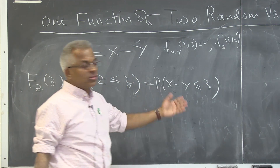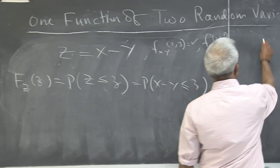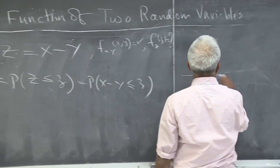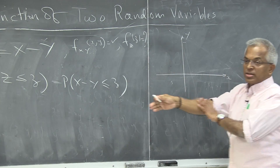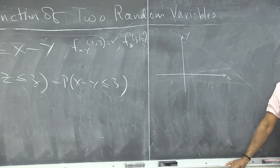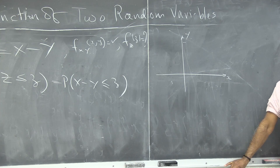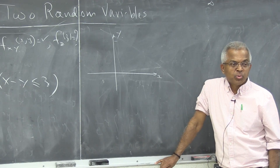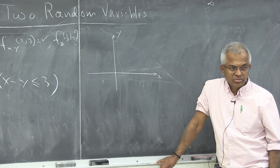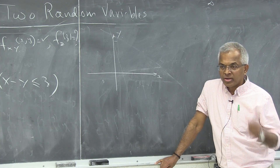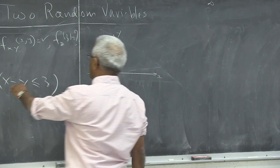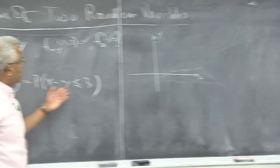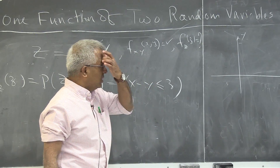We need to figure out where this region is in the two-dimensional plane. You have x, you have y. We need to draw the line x minus y equal to z. If you do not know how to draw it, just pick two points. From x minus y equal to z, put y equal to 0, and x is z.